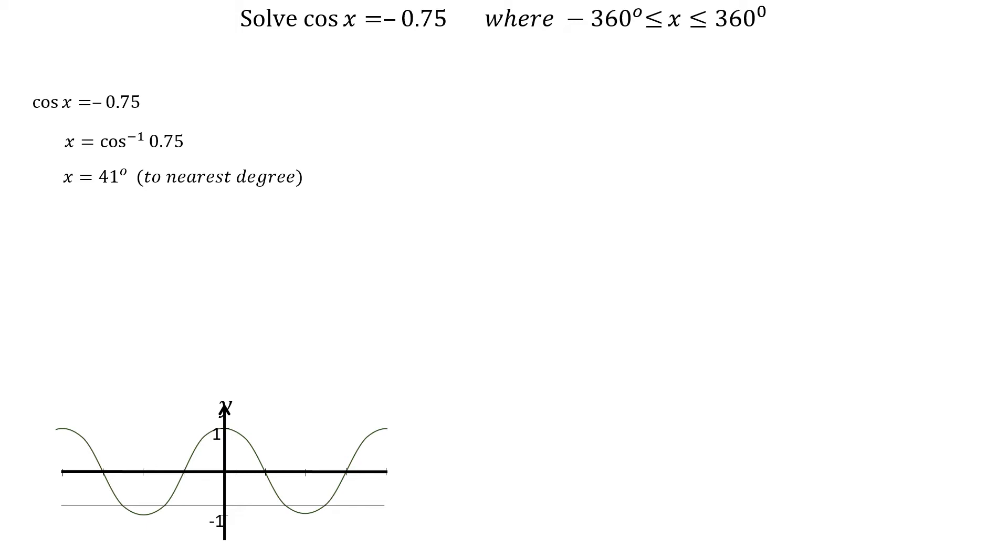We need to show the 41 degree angles where cos is negative in the cast diagram. Cos is negative in the second and third quadrants, so we show 41 degrees from the horizontal in these two quadrants.